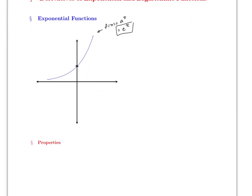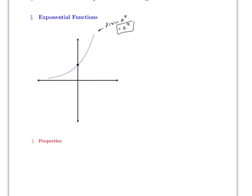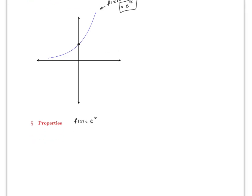Some properties important to remember for calculus: notice that e^x never crosses the x-axis, and it keeps going to infinity. So if f(x) = e^x, clearly the limit as x goes to infinity of e^x is infinity. And the limit as x goes to minus infinity of e^x equals zero — that should be obvious from the graph.